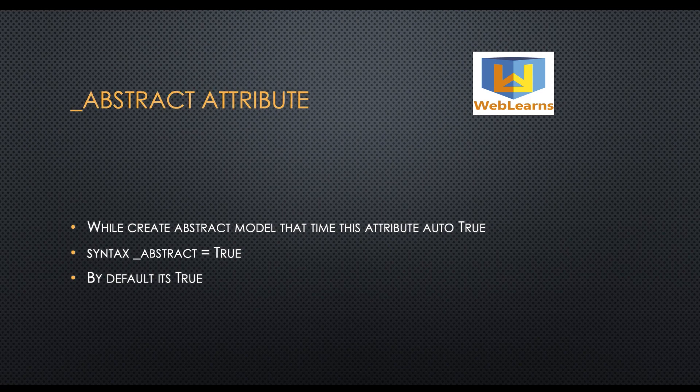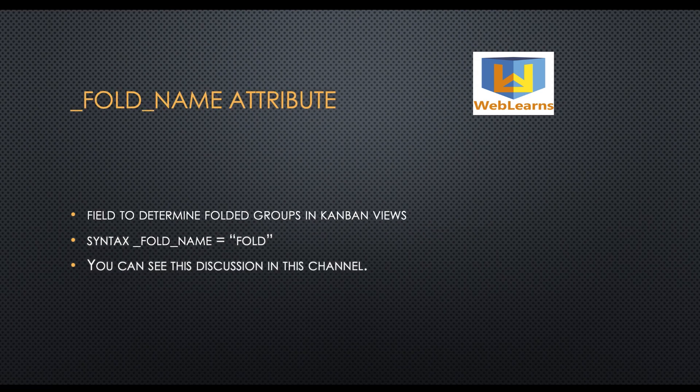Similarly, the underscore abstract attribute: whenever you are creating an abstract class, underscore abstract equals true. The supported data type is the same as underscore transient — boolean, true and false. This was already discussed in the first session on how to create a model, so you can refer to that.